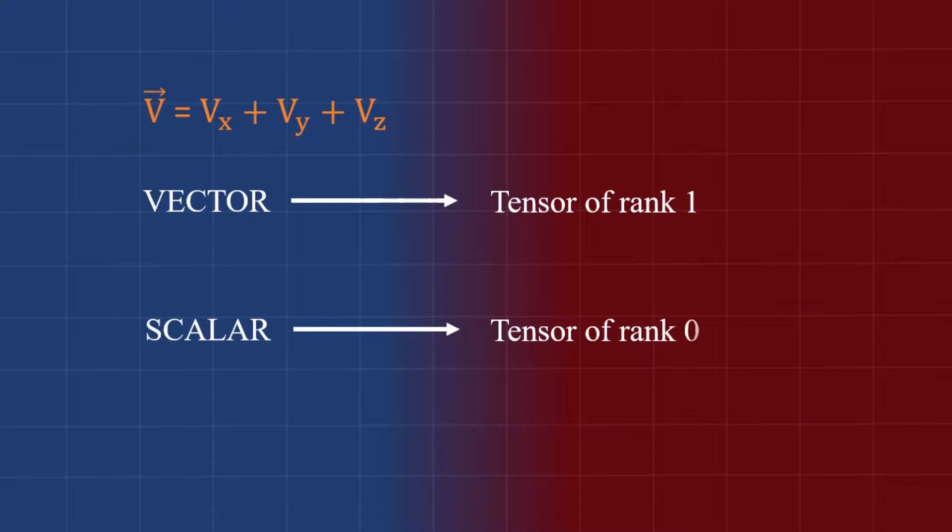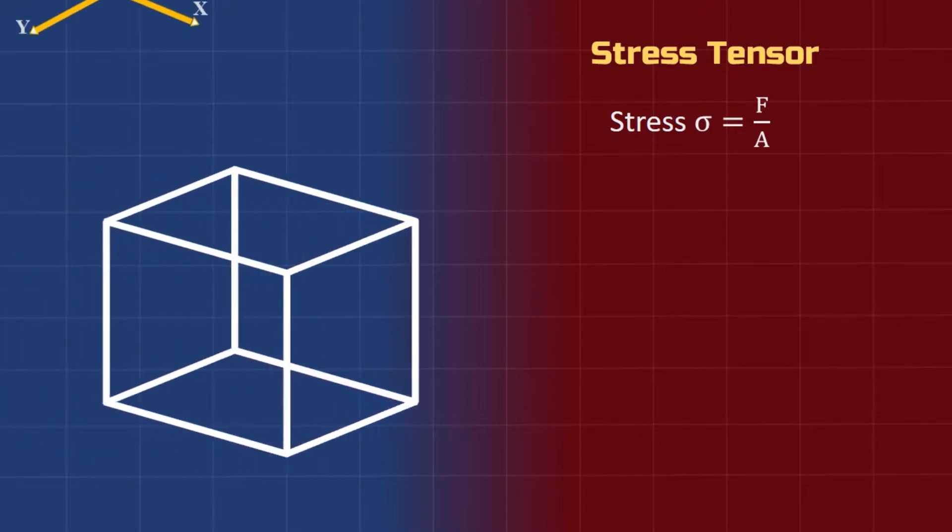Now we will see a tensor in three-dimensional space—that is, stress tensor. Stress, as we know, is given by force divided by area. If we take a cubical solid element, we can see a stress component sigma xx, which is normal to the surface in x direction. So this is known as normal stress.